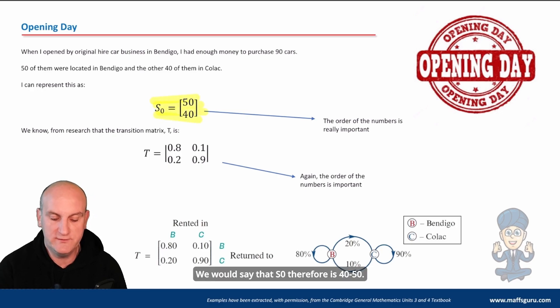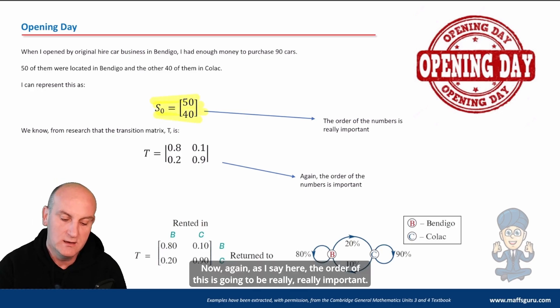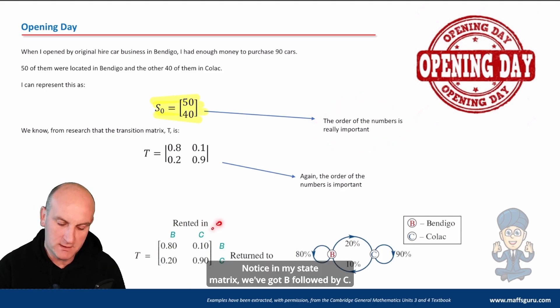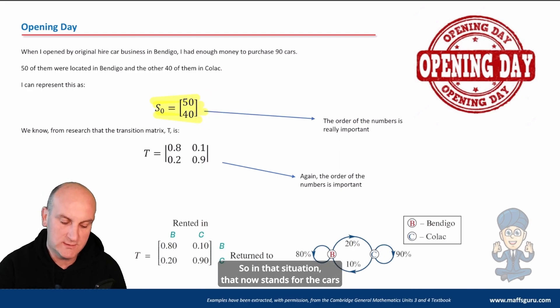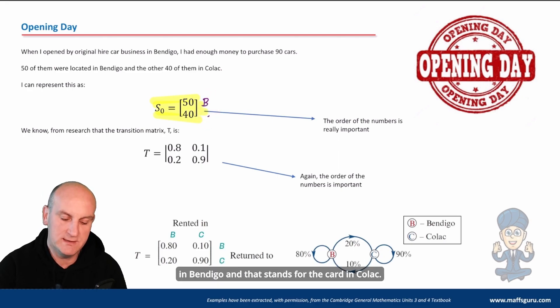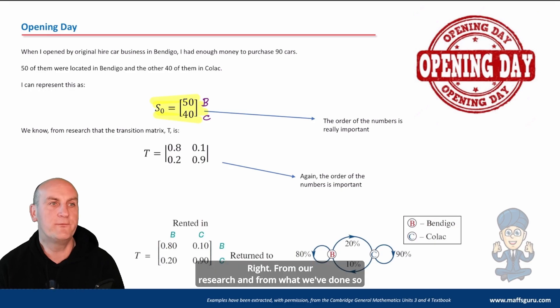So how would we model that in a matrix? Well, here we go. We would say that S₀ therefore is 50, 40. Now again, the order of this is going to be really, really important. Notice in my state matrix we've got B followed by C, so I would now have to do the same here starting from top to bottom. So in that situation, that now stands for the cars in Bendigo and that stands for the cars in Colac. And getting these in order is again so important.